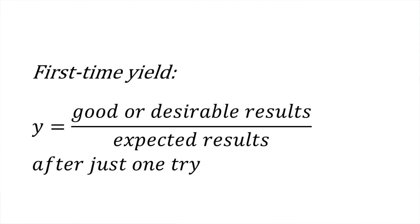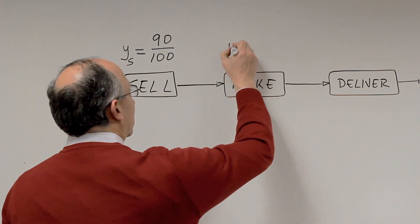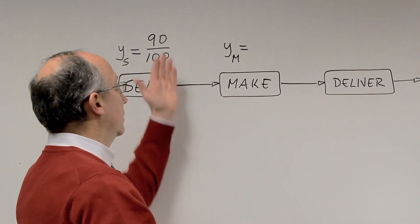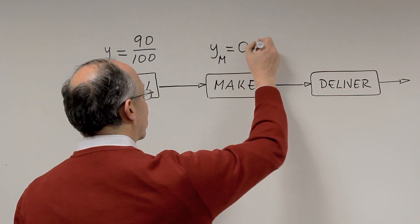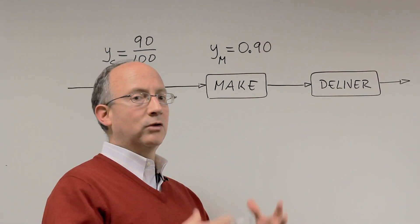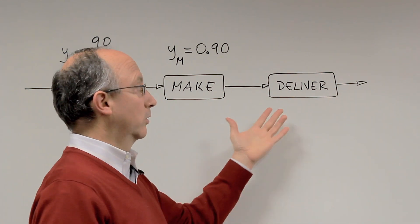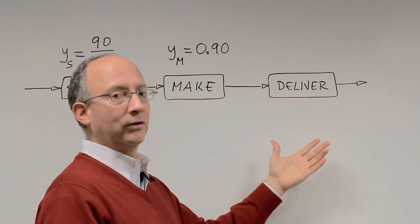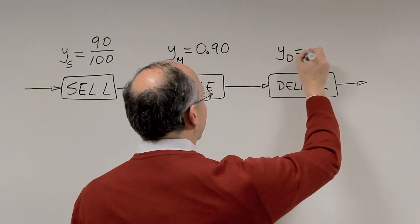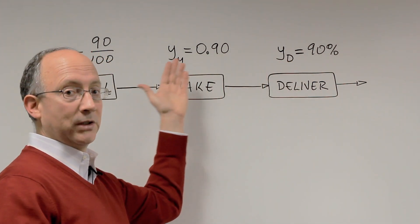Let's say now that the make function at the factory or the provision of the service also has a certain yield. That yield for the make function is going to be similarly 90 out of 100. I'm just going to write this number in a different way: 90 divided by 100 would be 0.90, but it is obviously exactly the same amount. Now, the actual delivery, which may include transportation, installation, and some elements of customer service, will also have a certain yield. Let's just say that it also has a 90% level of performance. By the way, I'm writing 90% in three different ways, but the number is exactly the same.